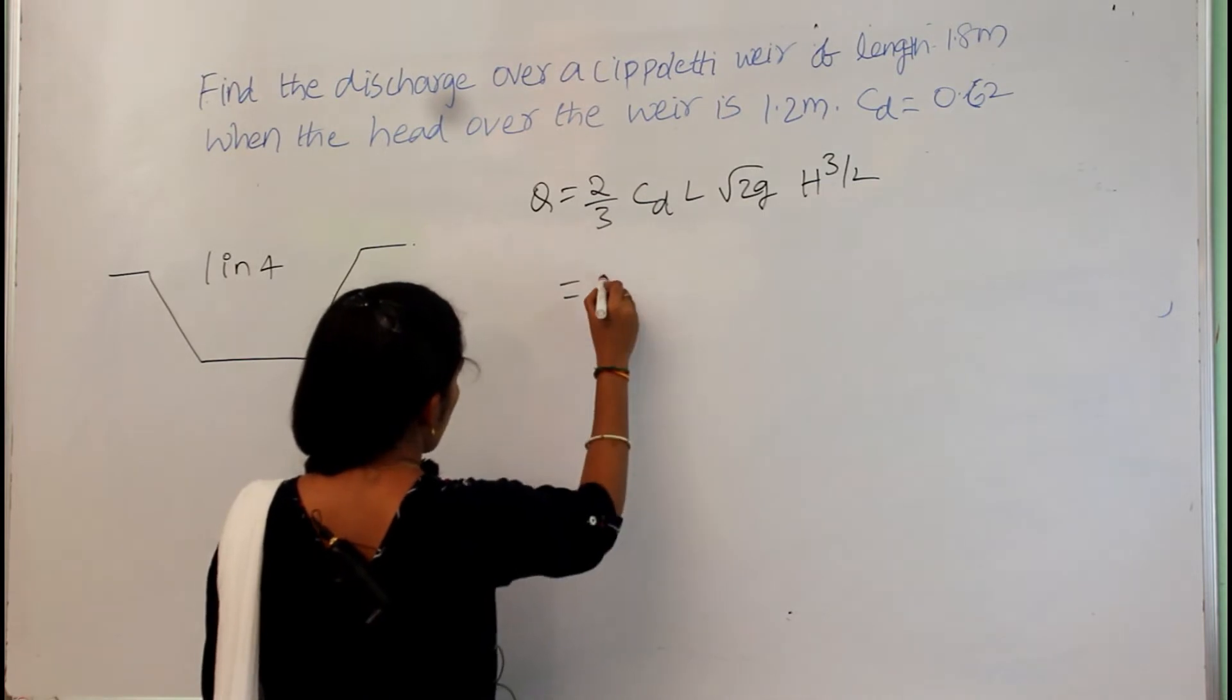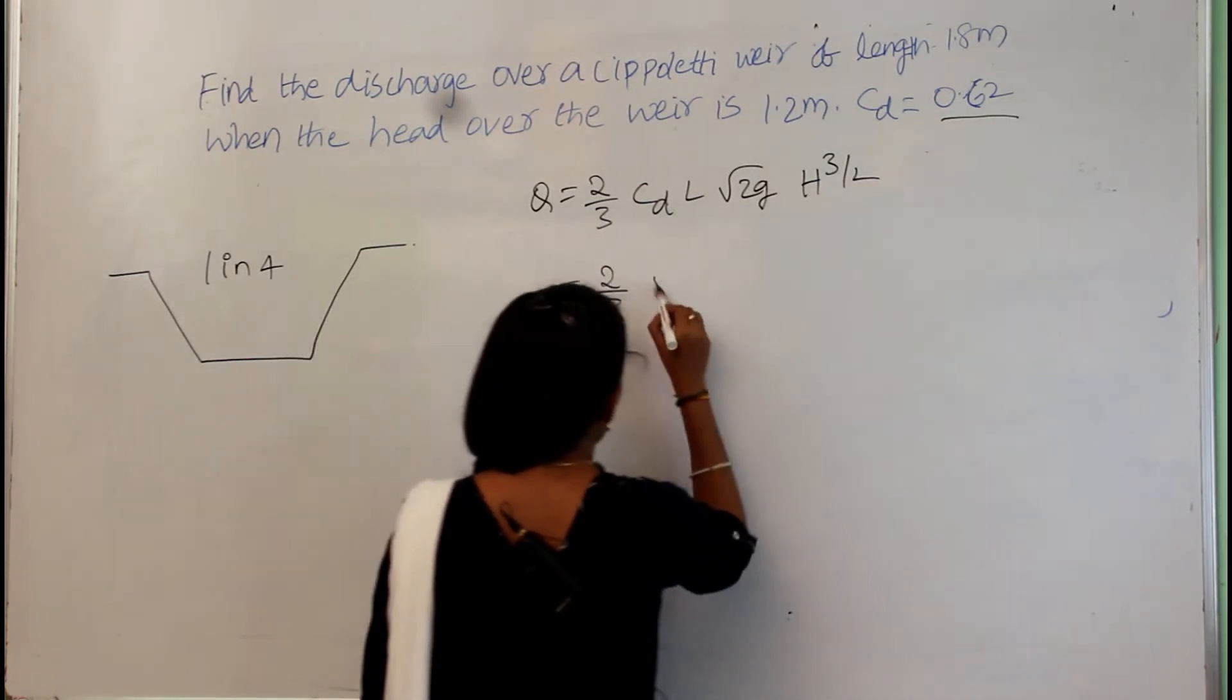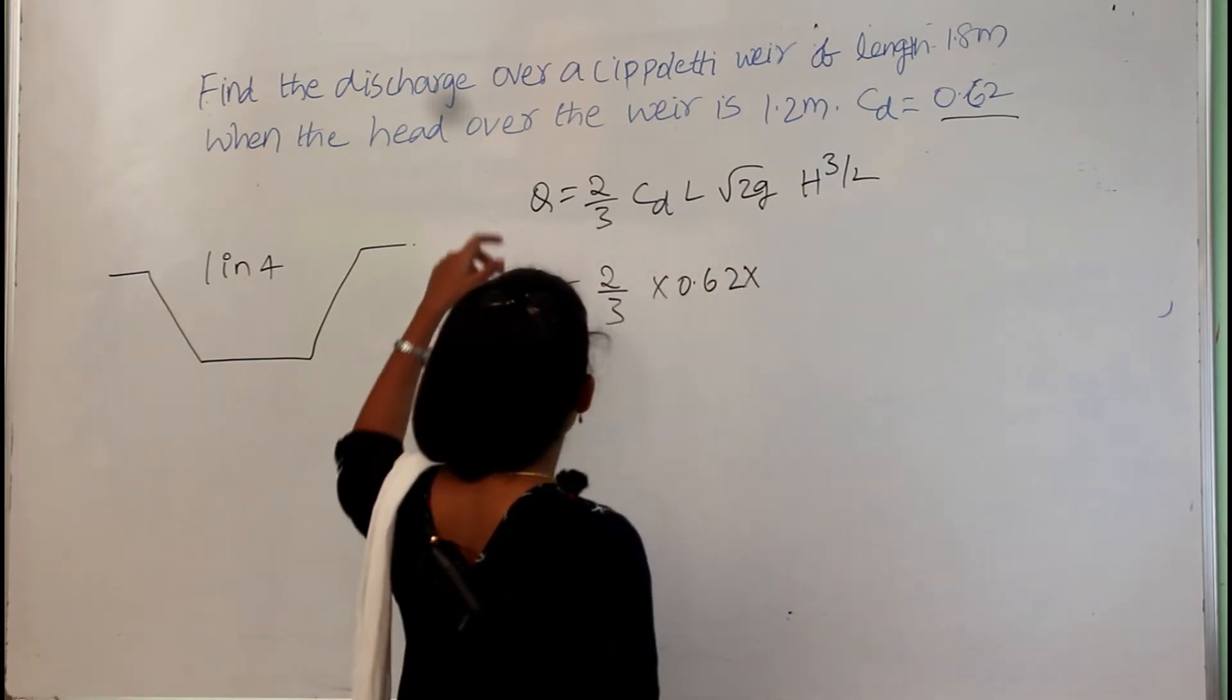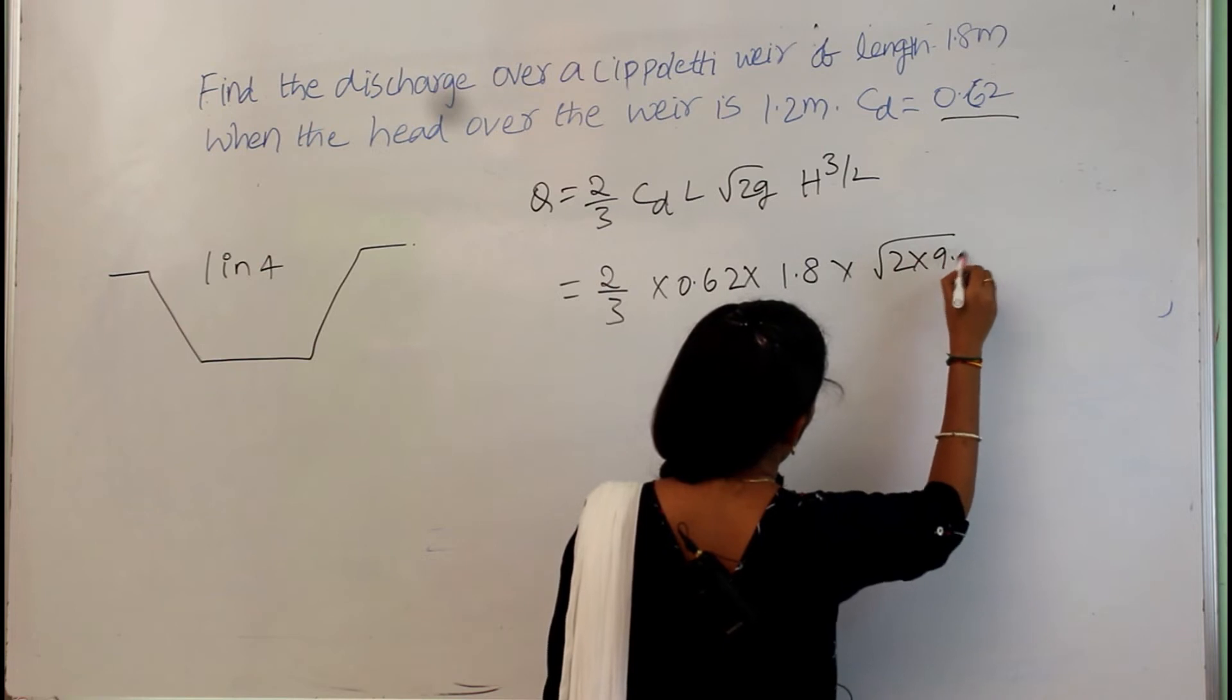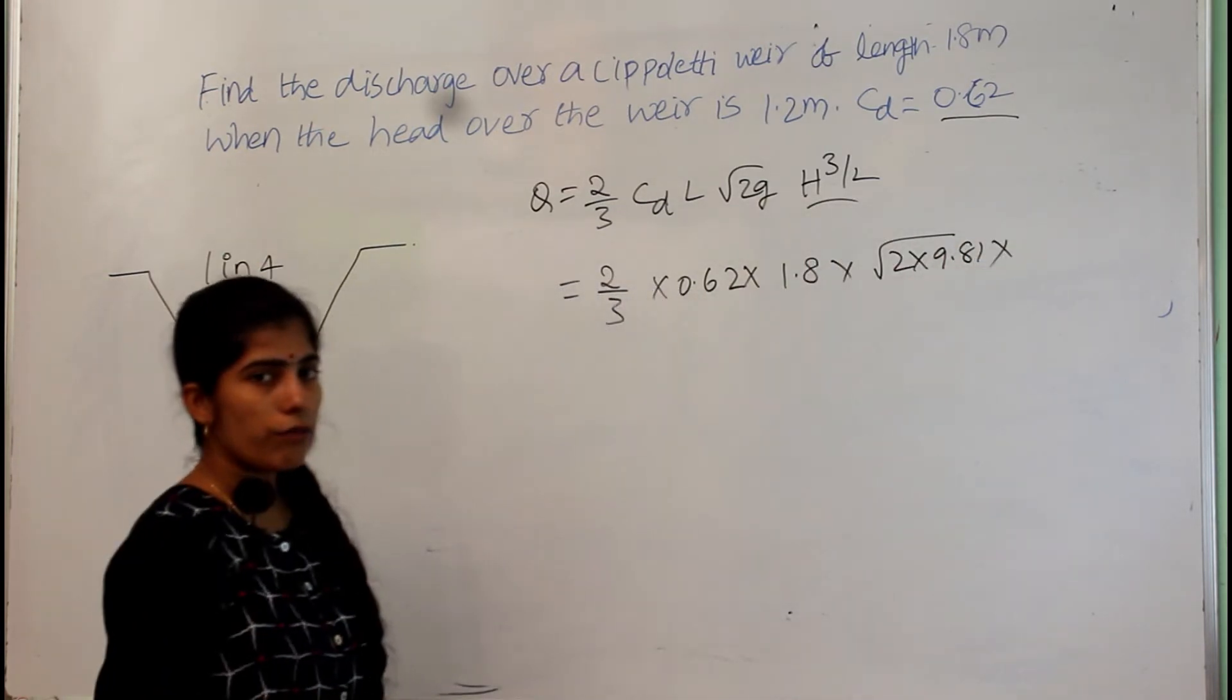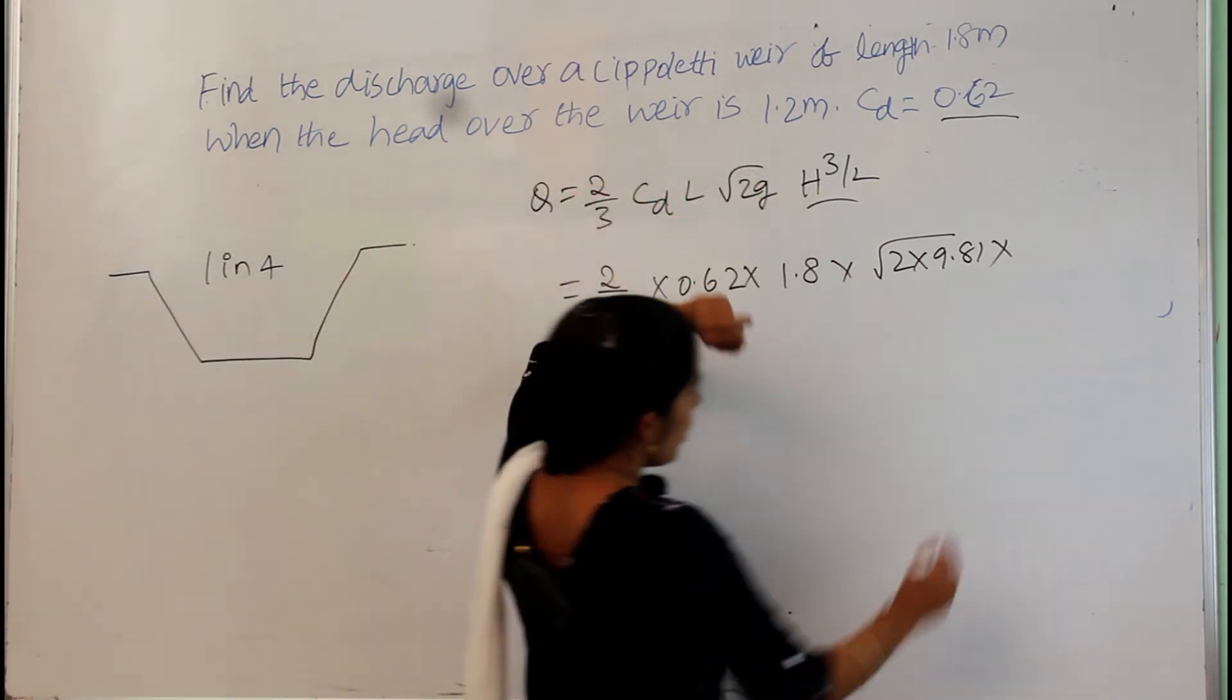So, Cd is nothing but the coefficient of discharge, they given as 0.62, and the length is nothing but length of the weir, that is they given as 1.8 meters, and root 2g value we already know is 9.81, and head H is nothing but the head of the water present in the weir, that is 1.2 meters they given.